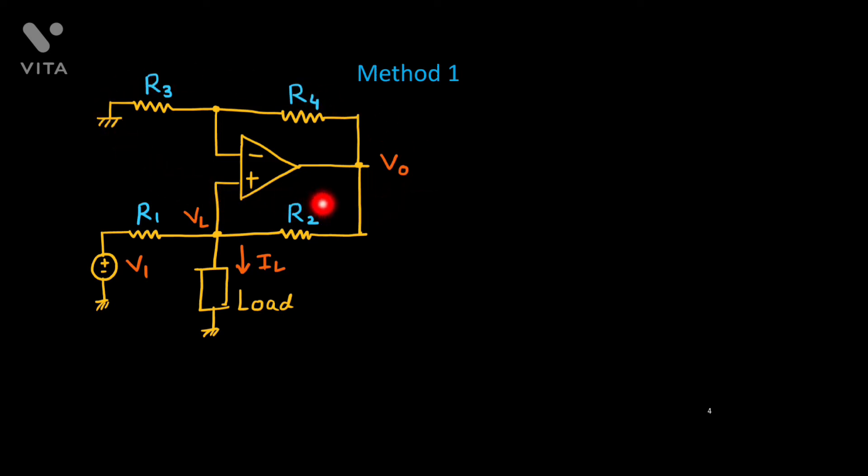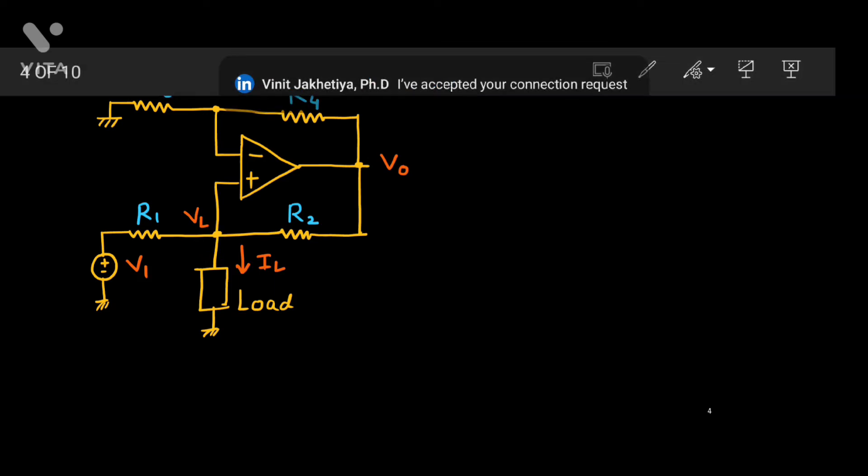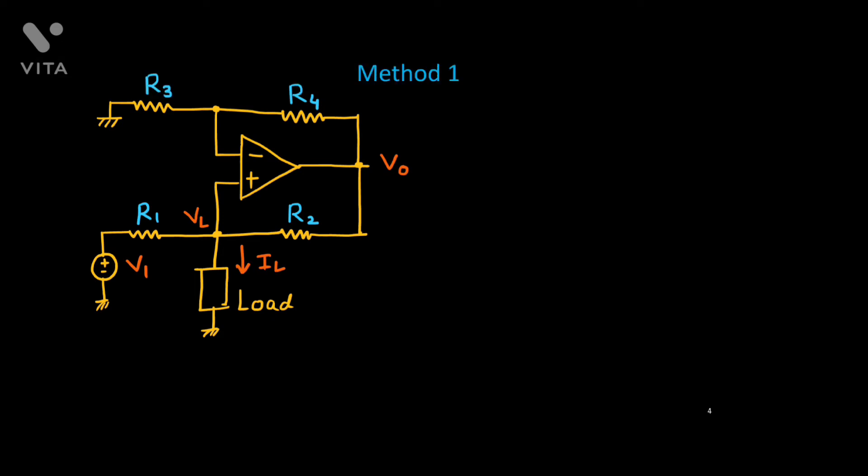You see there is a negative feedback and this R3 is grounded. As there is negative feedback and we are considering ideal op amp, there is no current flow here. We will consider this circuit first. This node potential is VL and this output potential is V0. This circuit is a non-inverting amplifier circuit.